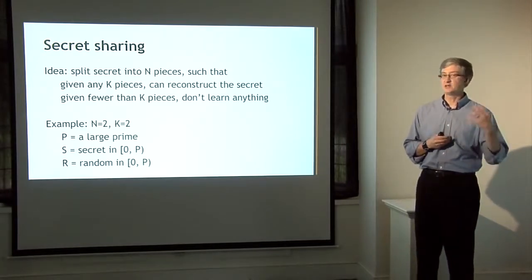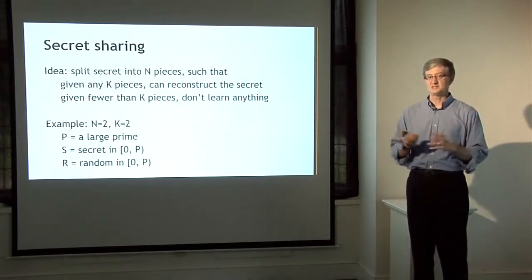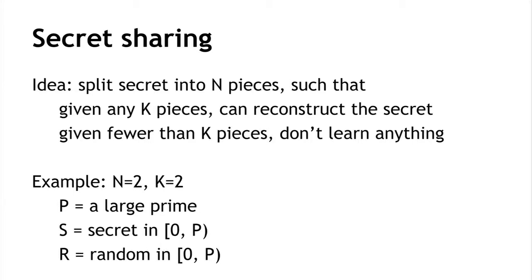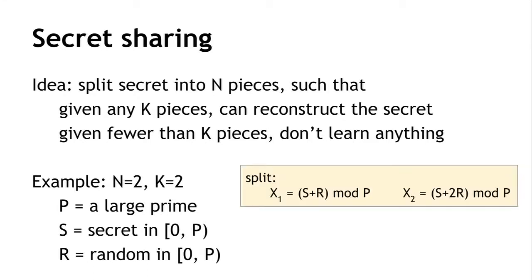For example, n equals 2 and k equals 2 means we divide the secret into two pieces and need both to put them together. We first generate a large prime number p, then S is the secret between 0 and p minus 1. We generate a random value r in the same range. We split the secret into pieces: x1 equals s plus r modulo p, and x2 equals s plus 2r modulo p. Given both shares, we compute 2 times x1 minus x2 modulo p: that gives 2s plus 2r minus s minus 2r, leaving just s. Given only one share, we don't learn anything — it's equally likely to take on any value between 0 and p minus 1.